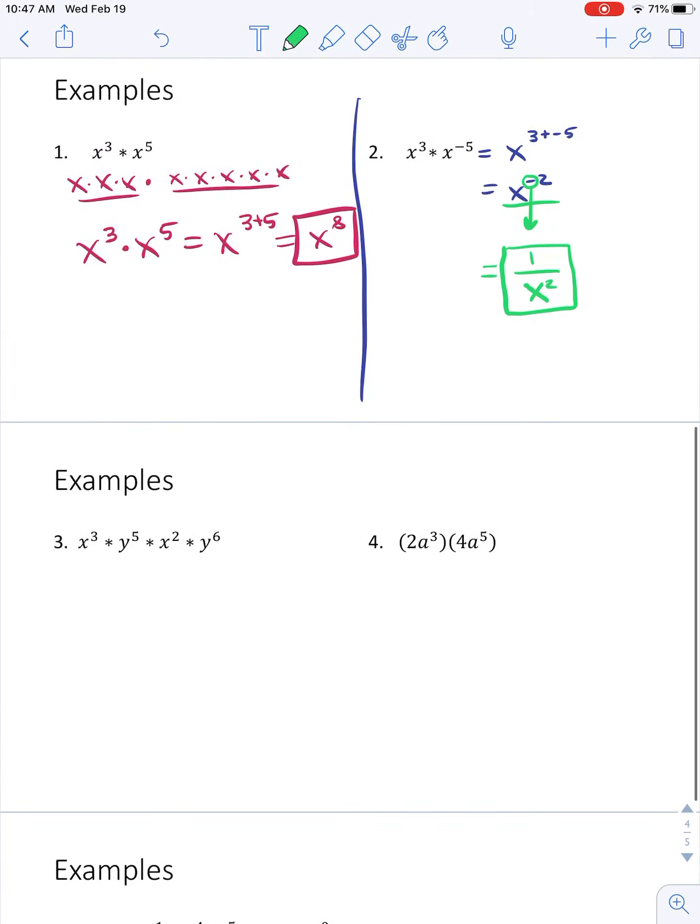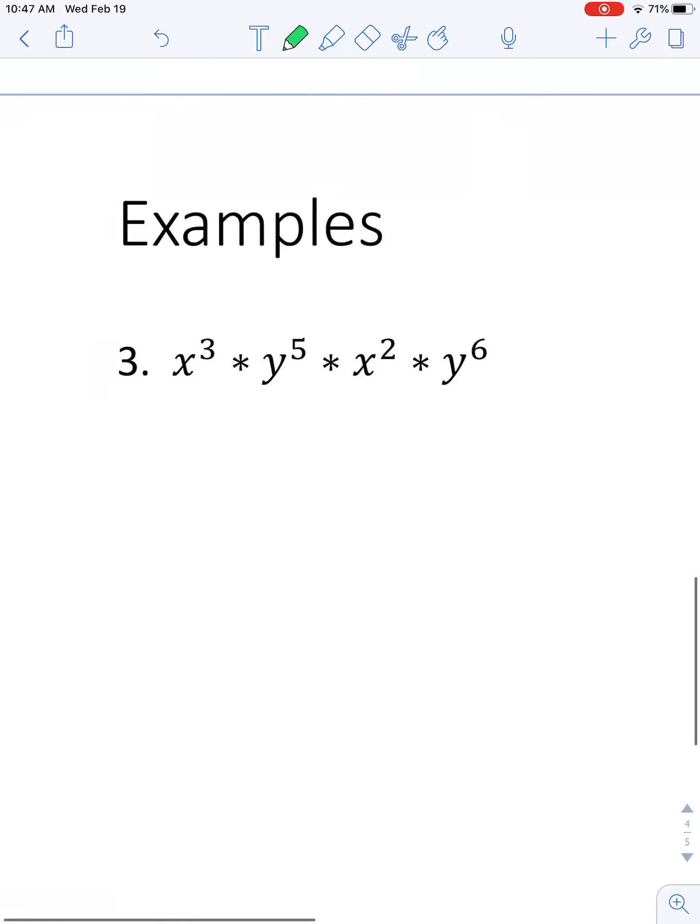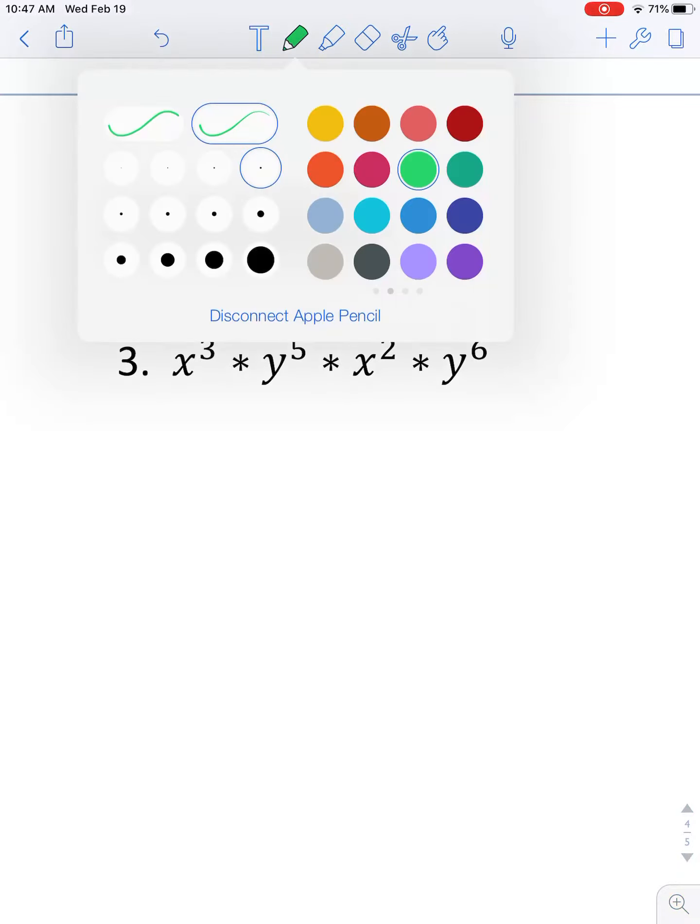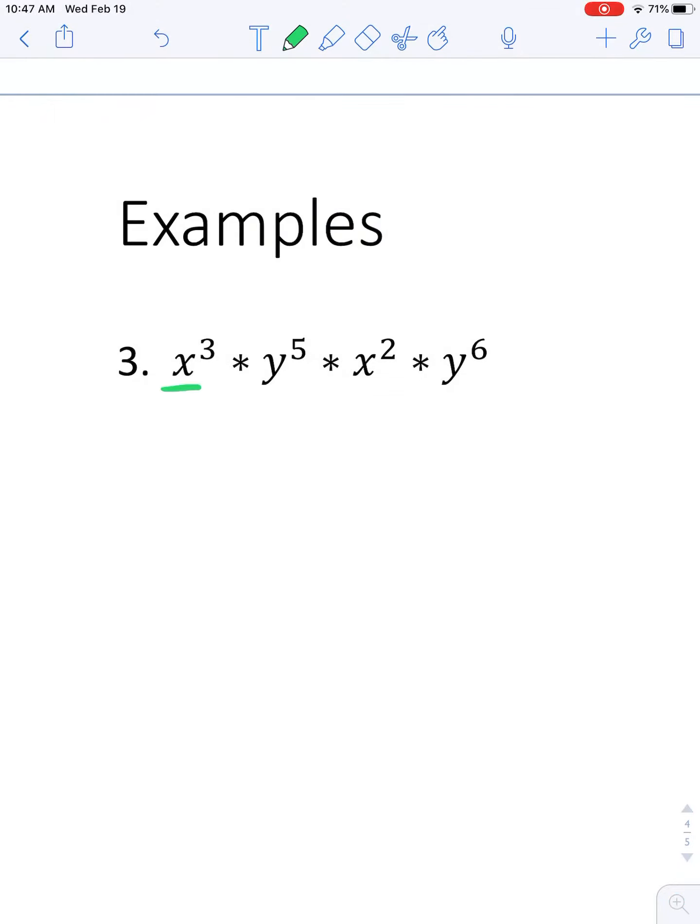Let's do a couple more, a little bit slightly challenging problems. Now, this rule only works for common bases. So you notice we have x to the 3rd, x squared. You're allowed to rearrange multiplication, so that's what I'm going to do. I'm going to move this multiplication chain around. I can put that together to say I have 3 x's and I have 2 more x's. I have 5 x's.